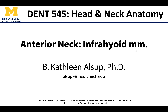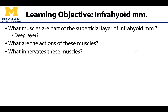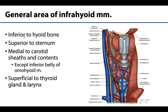Hello anatomy friends. This is Dr. Alsip and in this video we are going to focus on the infrahyoid muscles, also known as the strap muscles, which are named because of their strap-like or ribbon-like appearance. With the infrahyoid muscles there are two different layers — a superficial layer and a deep layer. We'll talk about which muscles are in which layer, what their actions are, and lastly what innervates these muscles, with three out of the four sharing a common innervation and one outlier.